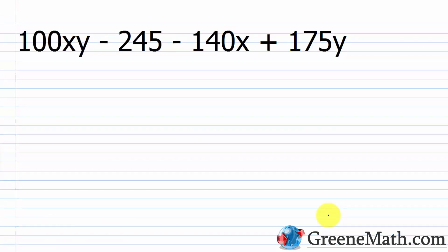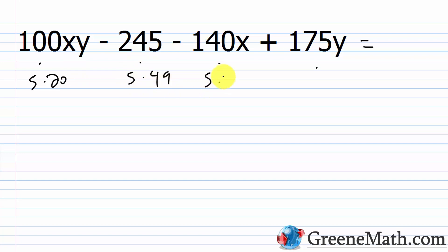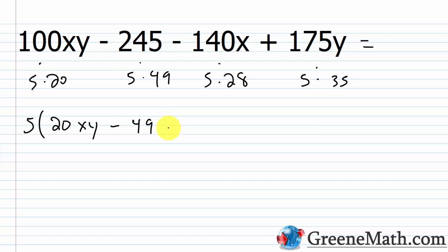Let's take a look at another one: 100xy - 245 - 140x + 175y. Before we start, can we pull anything out? Everything ends in a 0 or 5, so everything's divisible by 5. 100xy = 5×20xy, 245 = 5×49, 140x = 5×28x, 175y = 5×35y. There's nothing else common to all terms, so we factor out 5: 5(20xy - 49 - 28x + 35y).